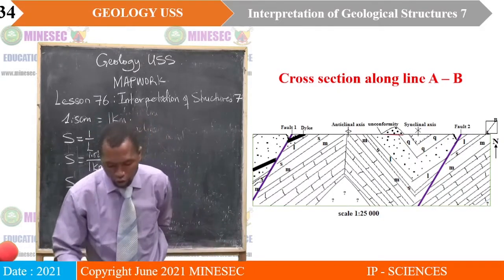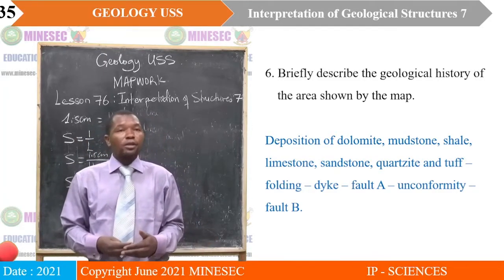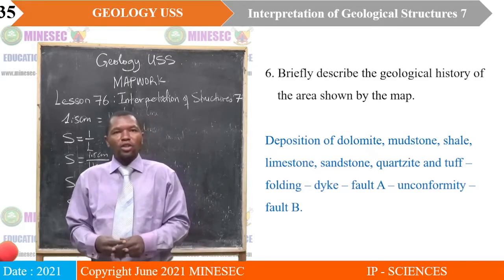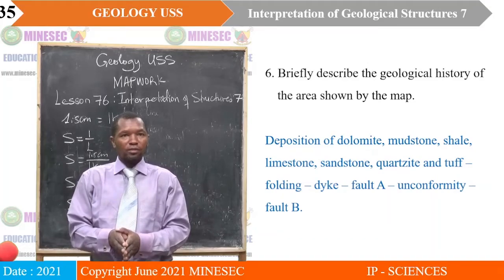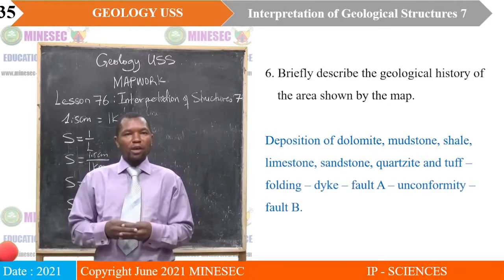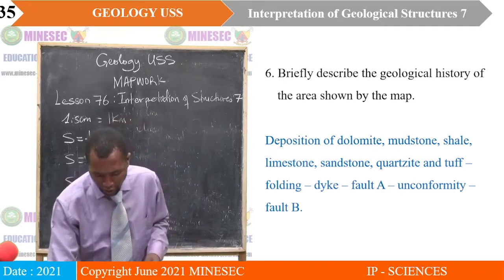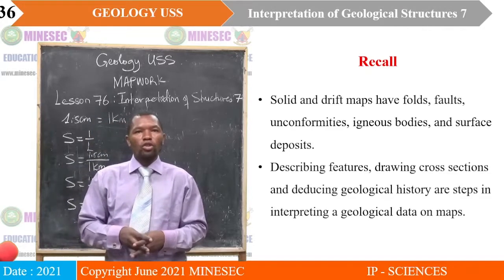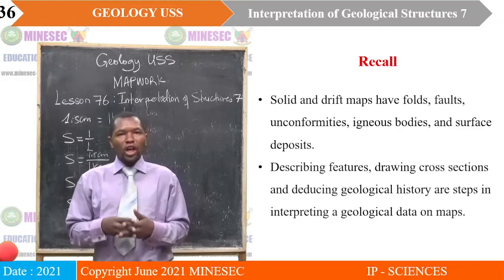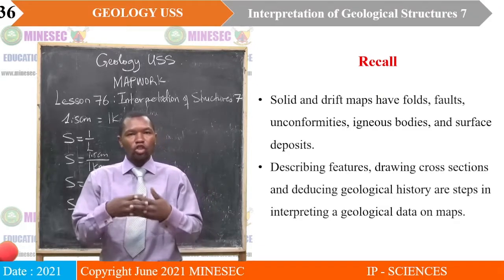Briefly describe the geological history of the area shown by the map. First, there was deposition of dolomite — the oldest bed — then mudstone, shale, limestone, sandstone, quartzite, and tuff. Then folding came in. Then the dike, then fault A (because fault A is displacing the syncline). Then the unconformity came in. Then lastly fault B, because fault B is displacing the unconformity — so it should be the last event in that area. Recall that solid and drift maps have folds, faults, unconformities, igneous bodies, and surface deposits. Describing features, drawing cross sections, and deducing geological history are the steps in interpreting geological data on maps.